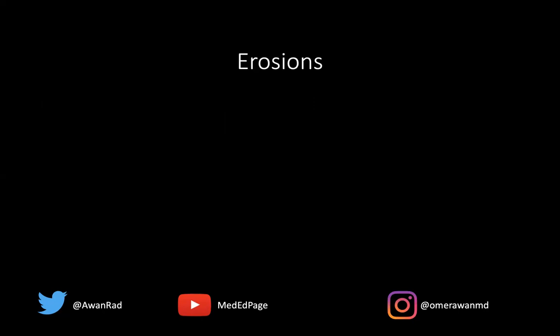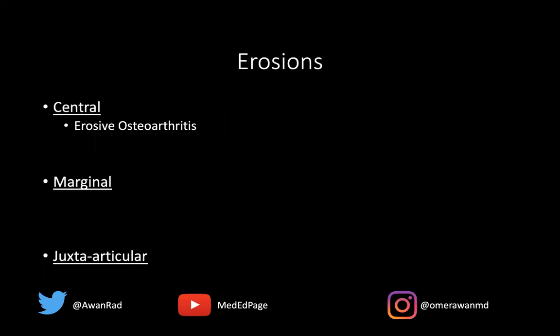I want to talk about erosions because they can be intimidating for many trainees, especially in the hand. I break erosions into three types: central, marginal, and juxta-articular. Central means the loss of bone is happening in the middle of the joint space. For central erosions, the differential includes erosive osteoarthritis, psoriatic arthropathy, and chronic reactive arthritis — which is radiographically identical to psoriasis and must always be included in that same differential.